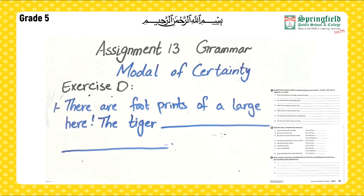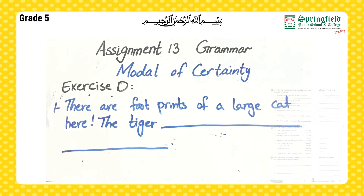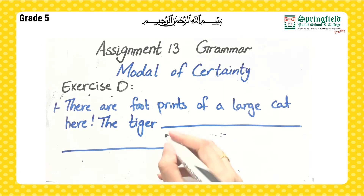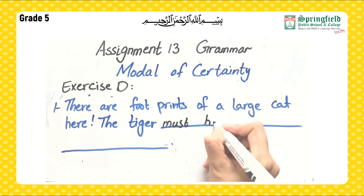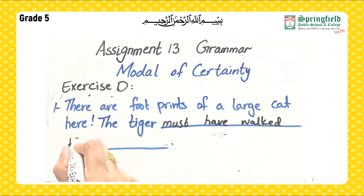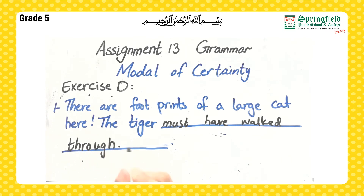Exercise D: Read the first sentence and write a second sentence. For items one, two, and five use 'must'; for three, four, and six use 'can't' or 'might.' First example: 'There are footprints of a large cat here' — we use 'must' — 'The tiger must have walked through.' Make the second sentence in this way for each item.